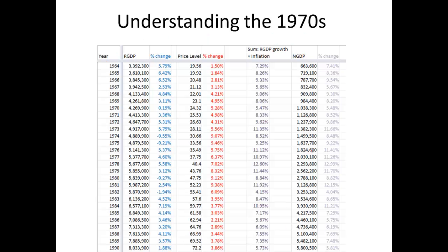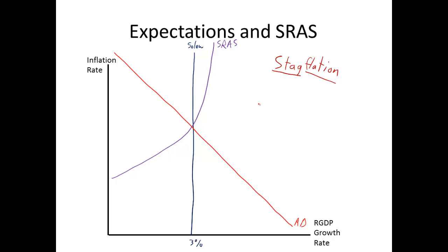Here's long-run output. Let's say our long-run output trend is still at 3%, call this the Solow curve. Here's short-run aggregate supply, slopes upward due to that sticky wage effect. If you're not familiar with this, go back and watch the previous lesson. And here's aggregate demand.